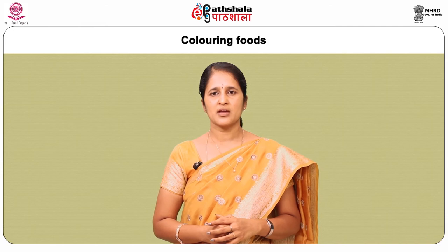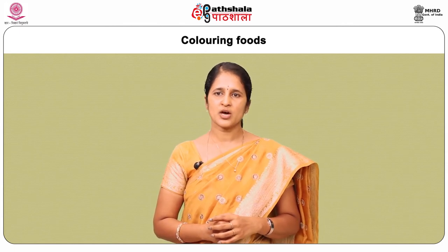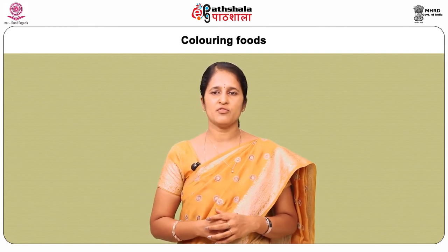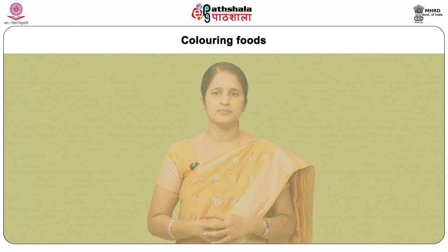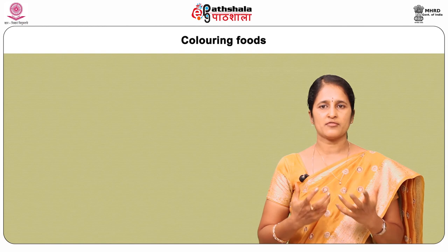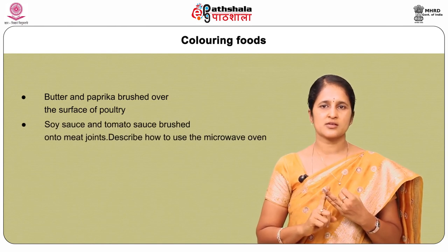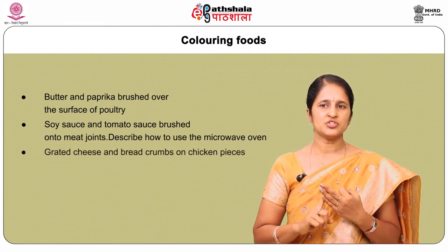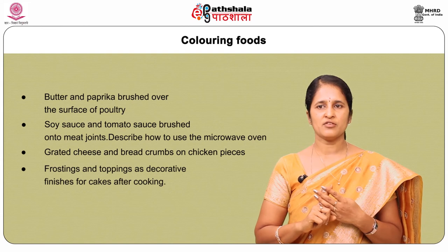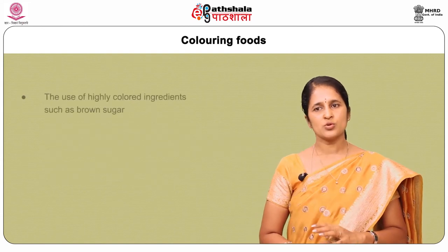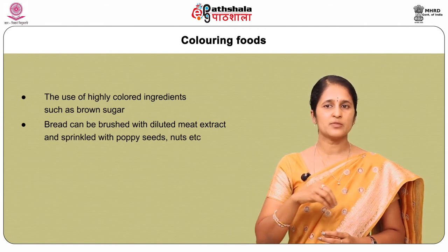Color can be developed using modifications of microwave equipment. Browning powders, commercially available in the market, can be used to achieve browning. Experimentation with normal kitchen ingredients provides numerous ways of achieving surface color. Browning of food can be achieved by brushing butter and paprika over poultry surfaces, brushing soy sauce and tomato sauce onto meat joints, spreading grated cheese and breadcrumbs on chicken pieces, or using highly colored ingredients such as brown sugar. Bread can be brushed with diluted meat extract and sprinkled with poppy seeds and nuts.